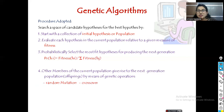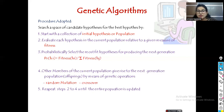The genetic operations we perform are mutation and crossover. If the population reaches the desired fitness measure, we stop the process; otherwise we repeat steps 2 to 4 until the entire population is updated or we reach a desired point.